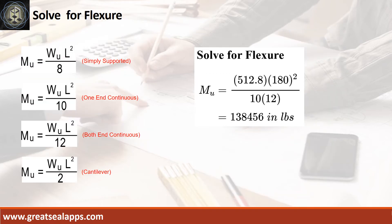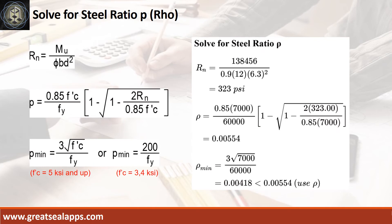Given factored load equals 512.8 pounds per foot, L equals 15 feet, the maximum moment is 138,456 inch pounds. Given maximum moment equals 138,456 inch pounds, resistance factor equals 0.9, B equals 12 inches, and D equals 6.3 inches.